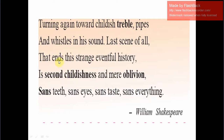'Last scene of all, that ends this strange eventful history, is second childishness and mere oblivion.' The last age of the person is called second childishness because he is in mere oblivion — completely unaware of whatever is going on around him and totally dependent on his family members for his basic needs. 'Sans teeth' — he has no teeth left. 'Sans eyes' — without eyesight. 'Sans taste' — he has got no taste. 'Sans everything' — he has nothing left.